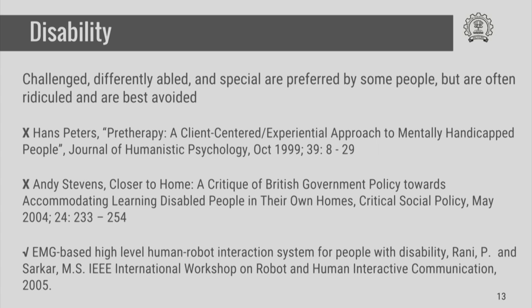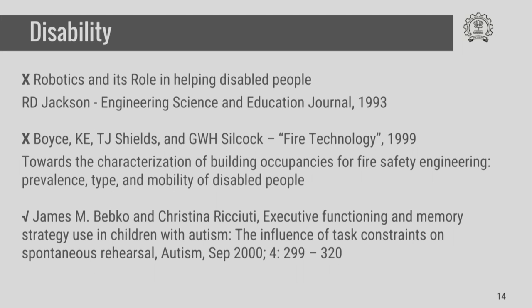In these examples, the first two are the wrong ways to refer to people with disabilities — one should avoid 'mentally handicapped' because the person comes after the disability. In the second example also, people come after the disability. The correct way is shown in the IEEE workshop proceedings, where 'people with disability' is used. Likewise, the first two examples in the next slide are to be avoided because the person comes after the disability. In the final example, there is a reference to 'children with autism' — autism is a health issue, so children should come first and autism referred to later.